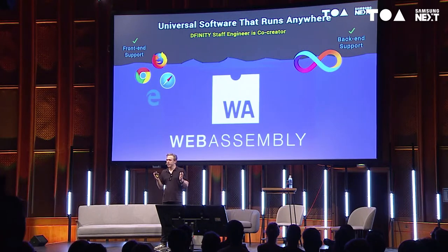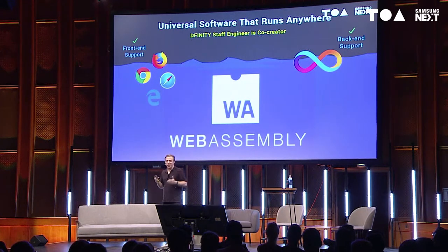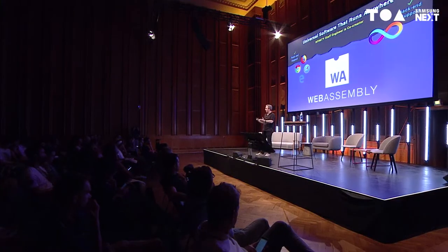So what kind of software will the internet computer run? The answer is universal software that runs anywhere — it's a thing called WebAssembly. Everyone needs to hear about WebAssembly — it's going to be absolutely huge. It's the first open standard for universal software that runs anywhere. You can think of it as a kind of Java that wasn't owned by Sun Microsystems, but incorporating all the learnings from the past 25 years. It's a virtual machine — you can write your software in any language and it will compile down to WebAssembly bytecode. The amazing thing is WebAssembly is already inside all of the major web browsers.